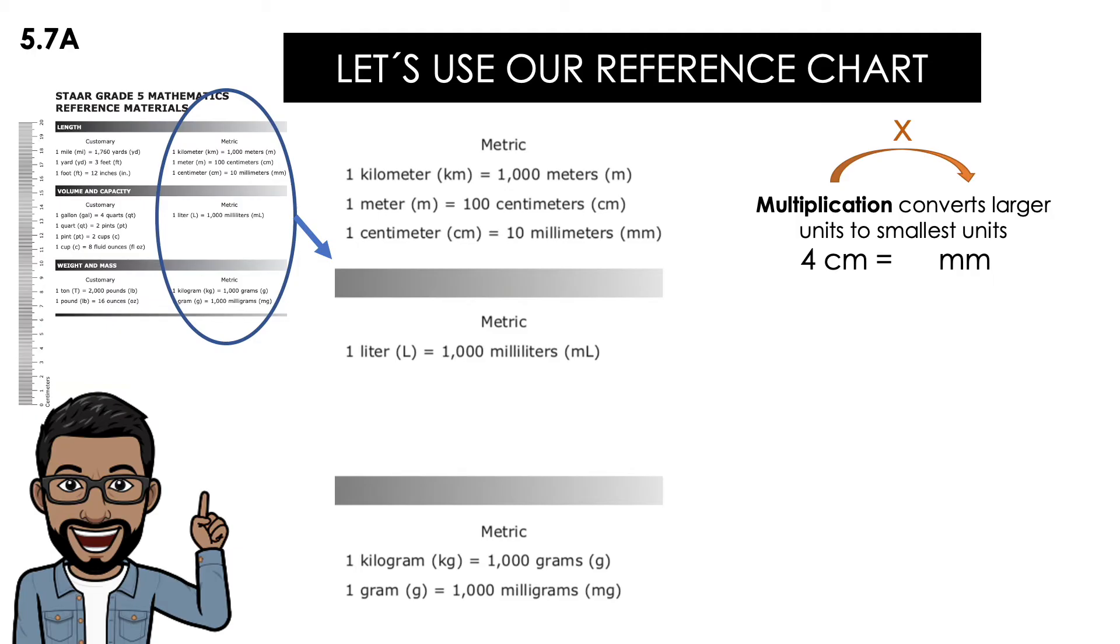So in this case, let's suppose we want to convert 4 centimeters to millimeters. What I'm going to do is say, okay, 1 centimeter times something equals 10 millimeters. So I'm going to go to my reference chart, times 10. 1 times 10, that means if I put 4 centimeters, 4 centimeters times 10 equals 40 millimeters.